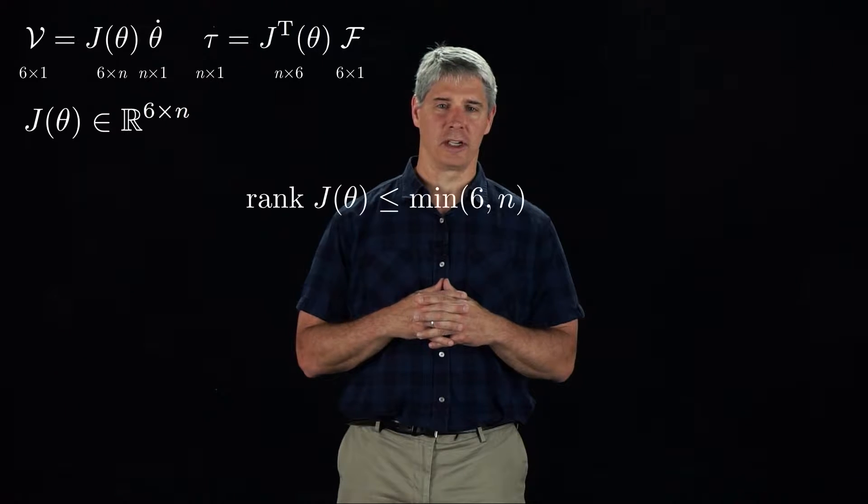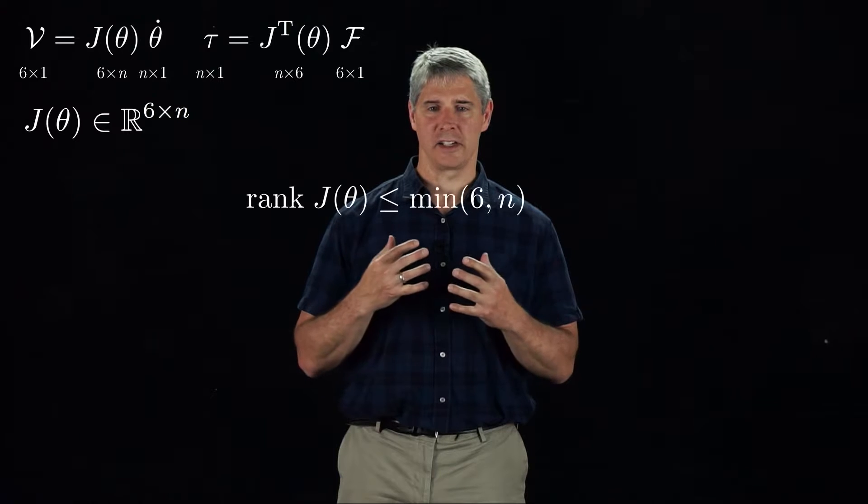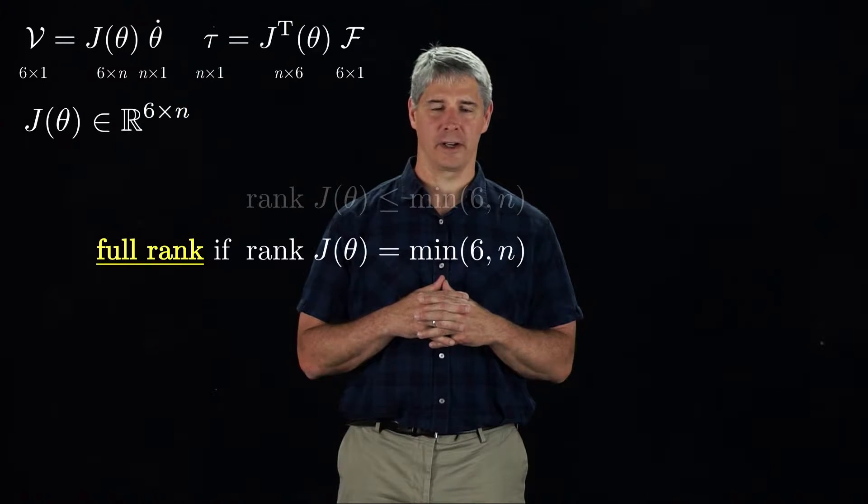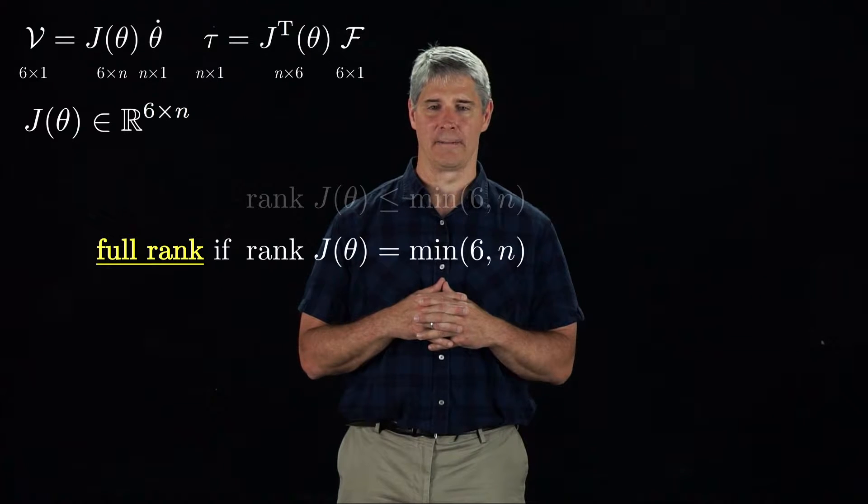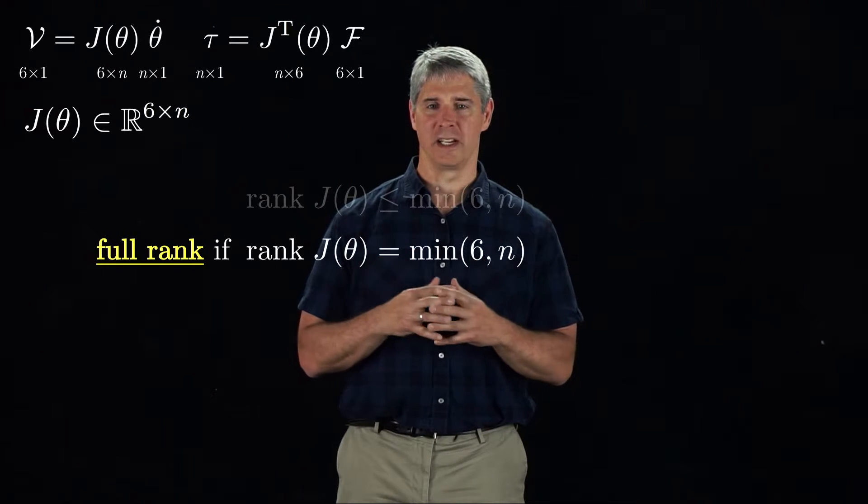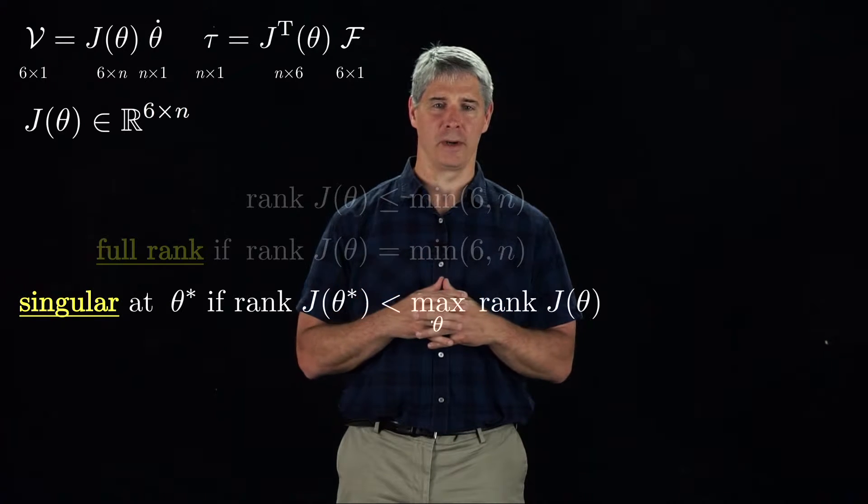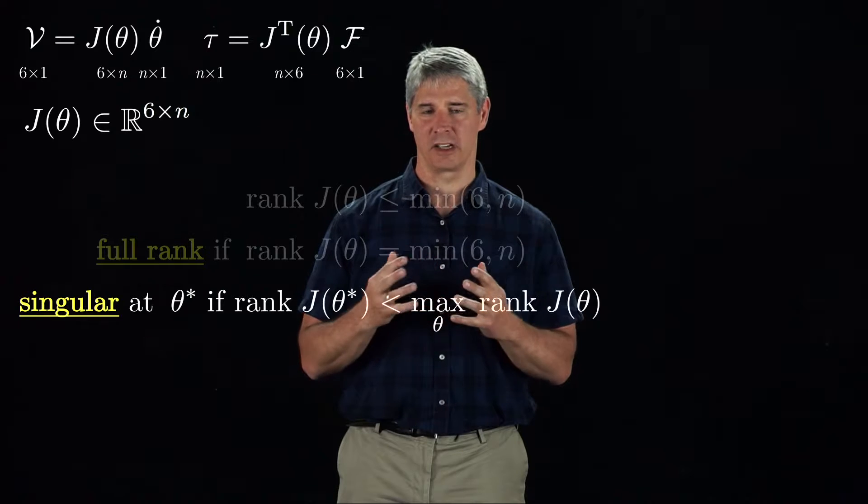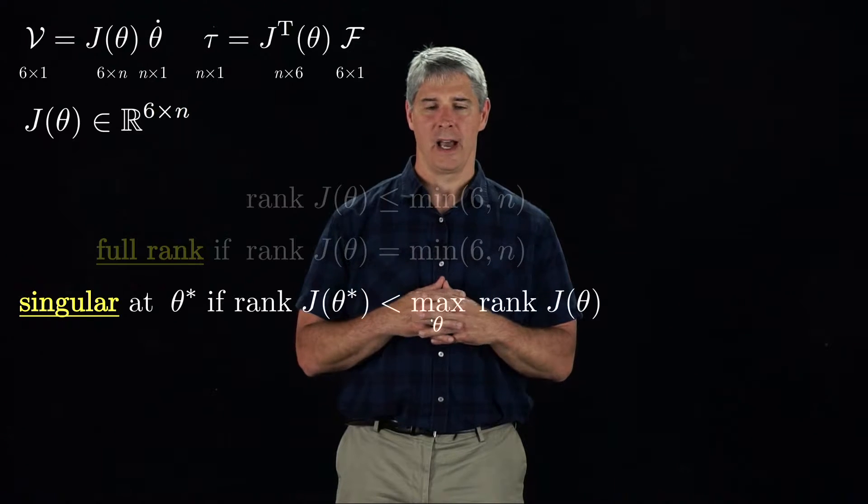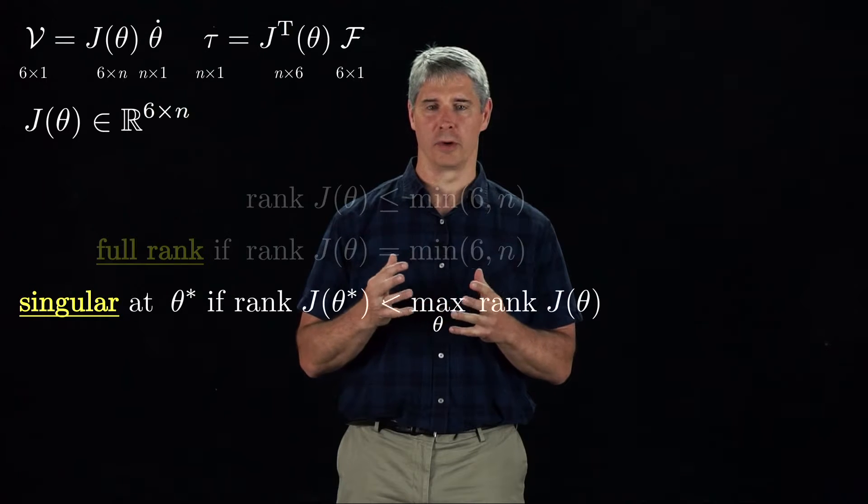This means that the rank of the Jacobian can be no greater than the minimum of 6 and n. We say that the Jacobian is full rank at a configuration theta if the rank is equal to the minimum of 6 and n. We say that the Jacobian is singular at a configuration theta star if the rank is less than the maximum rank the Jacobian can achieve. At a singular configuration, the robot loses the ability to move in one or more directions.